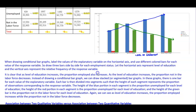Instead of drawing a conditional bar graph, we can draw stacked or segmented bar graphs. In these graphs, there is one bar for each value of the explanatory variable, and each bar is divided into segments such that the height of each segment represents the proportion of observations corresponding to the response variable. The height of the blue portion is the proportion employed, the red portion is the proportion unemployed, and the green bar is the proportion not in the labor force, for each level of education. We can again see that as level of education increases, the proportion employed increases while the proportion not in the labor force decreases.